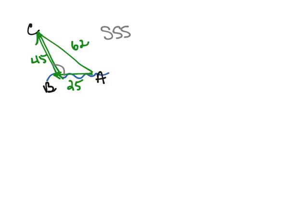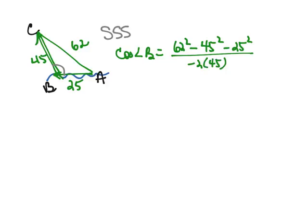So the cosine of angle B would be equal to 62 squared minus 45 squared minus 25 squared, divided by negative 2 times 45 times 25.